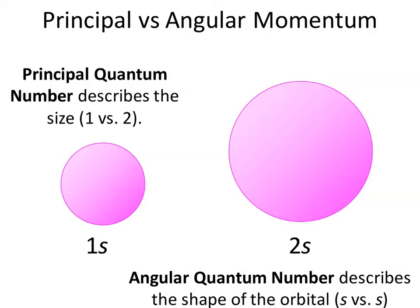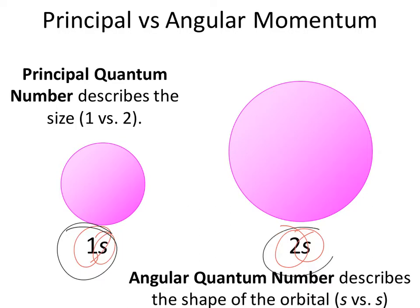So once again, the principal quantum number defines the size, or also the energy. The angular momentum quantum number defines the shape of the orbital. Because these are both s orbitals, they're both going to be spherical. But because we have a difference — here we have 1, here we have 2 — this one will have more energy and also be much bigger.